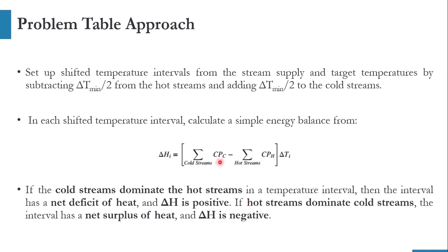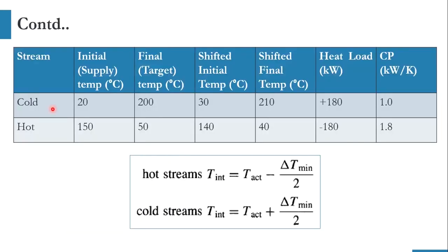If CP of H is higher than CP of C, the answer will be negative, meaning we have surplus energy available to exchange. If CP of C is higher than CP of H, delta H will be positive. The initial temperatures are: cold stream inlet 20°C, outlet 200°C; hot stream inlet 150°C, outlet 50°C. The heat load for the cold stream is 180 kW and for the hot stream is 180 kW.